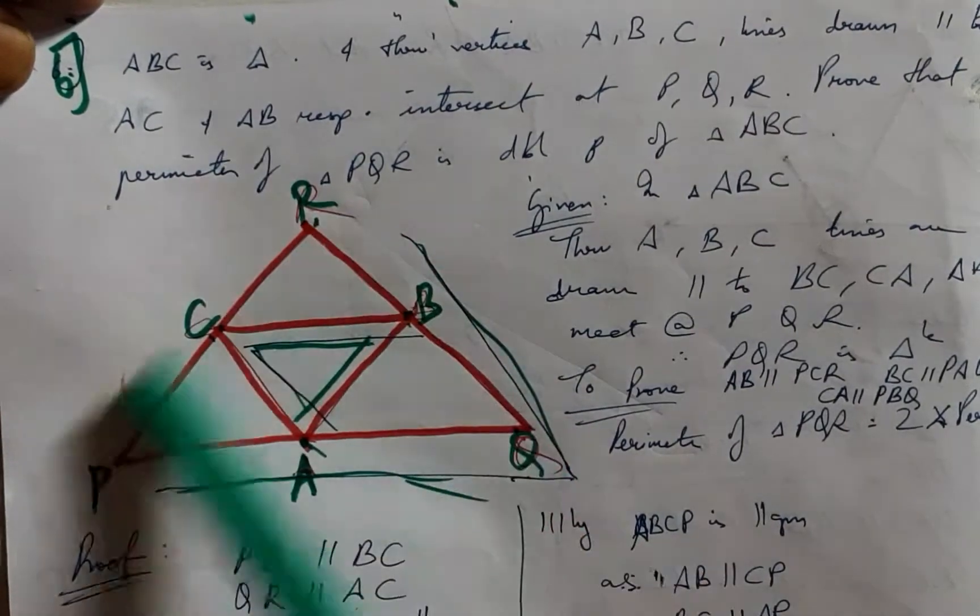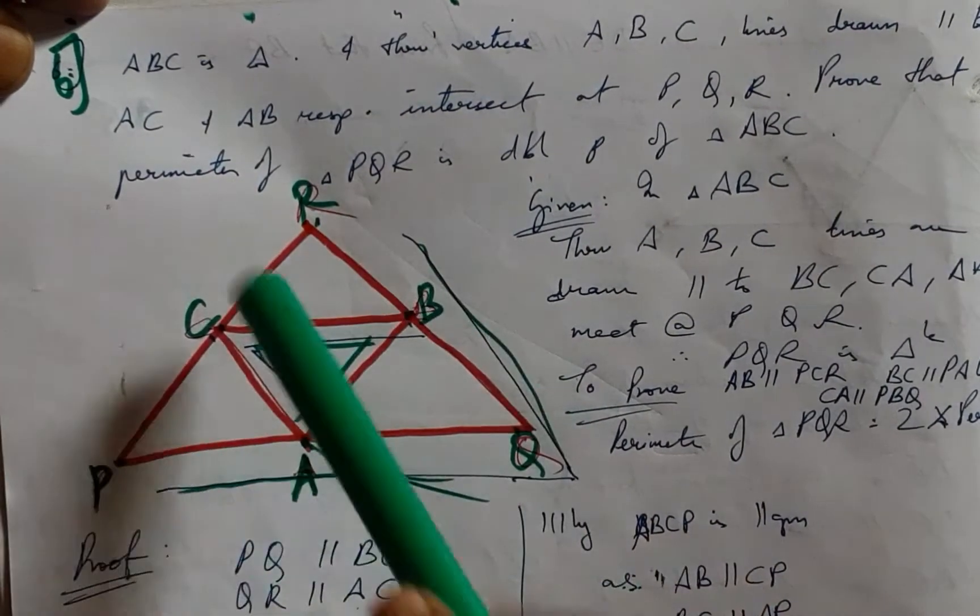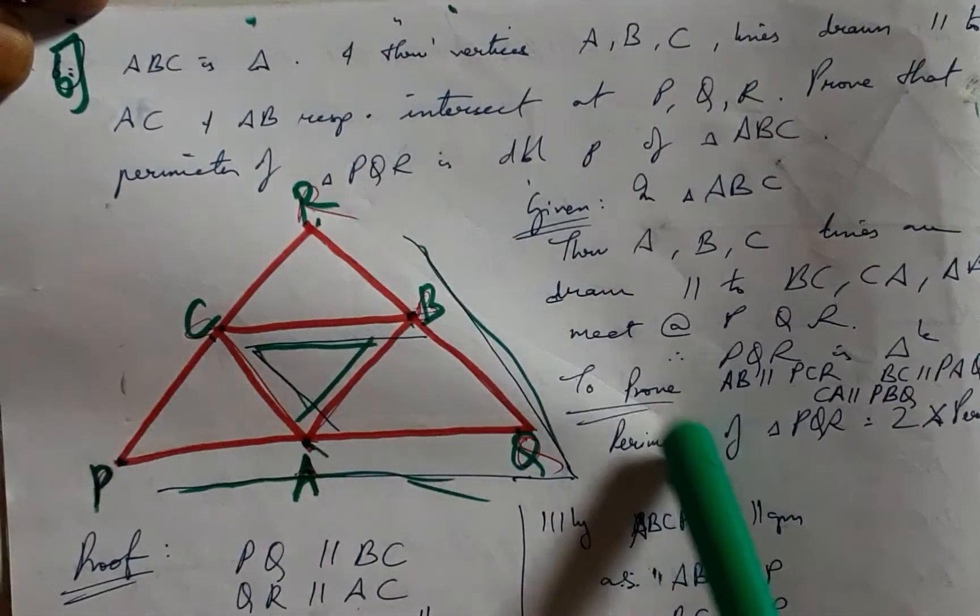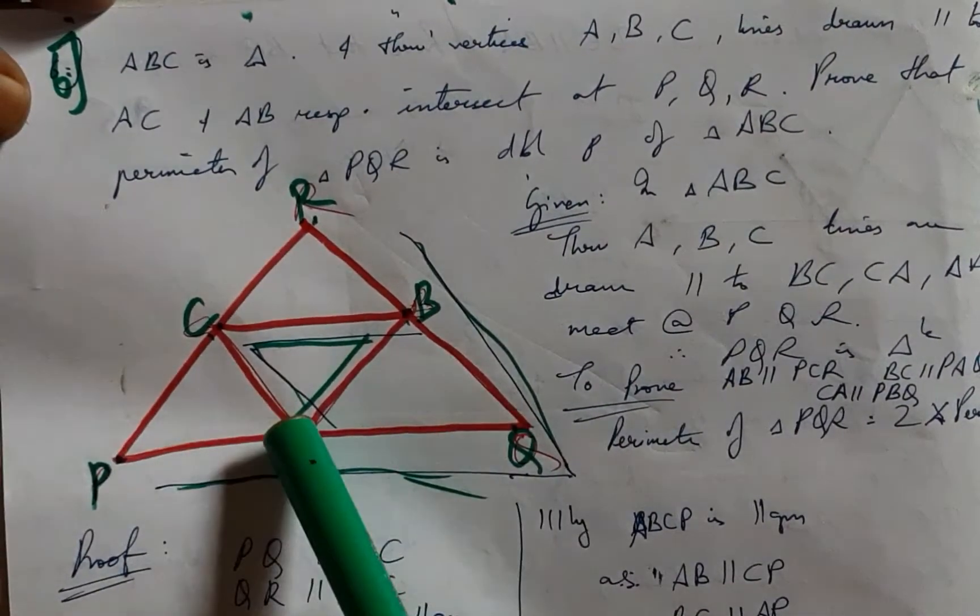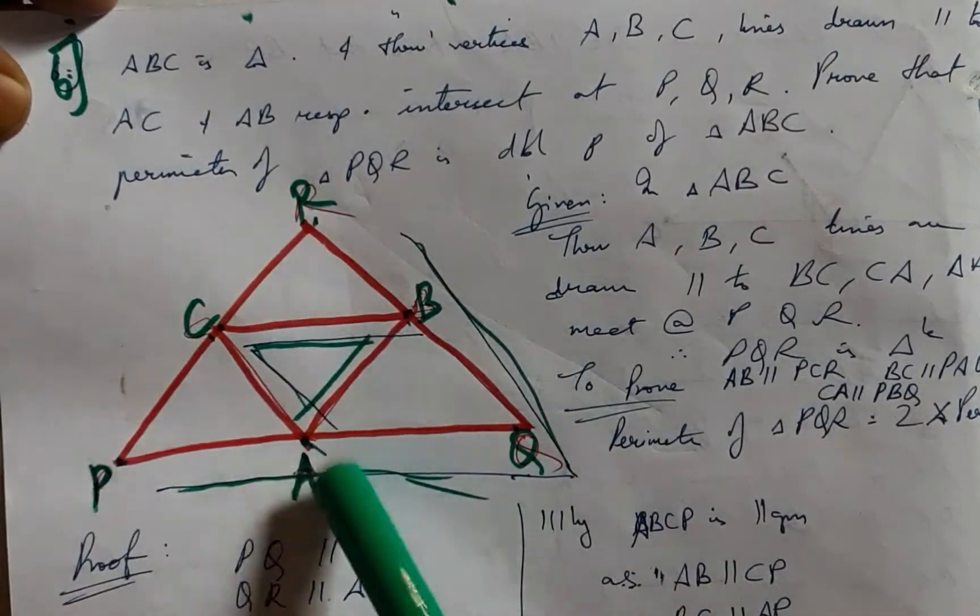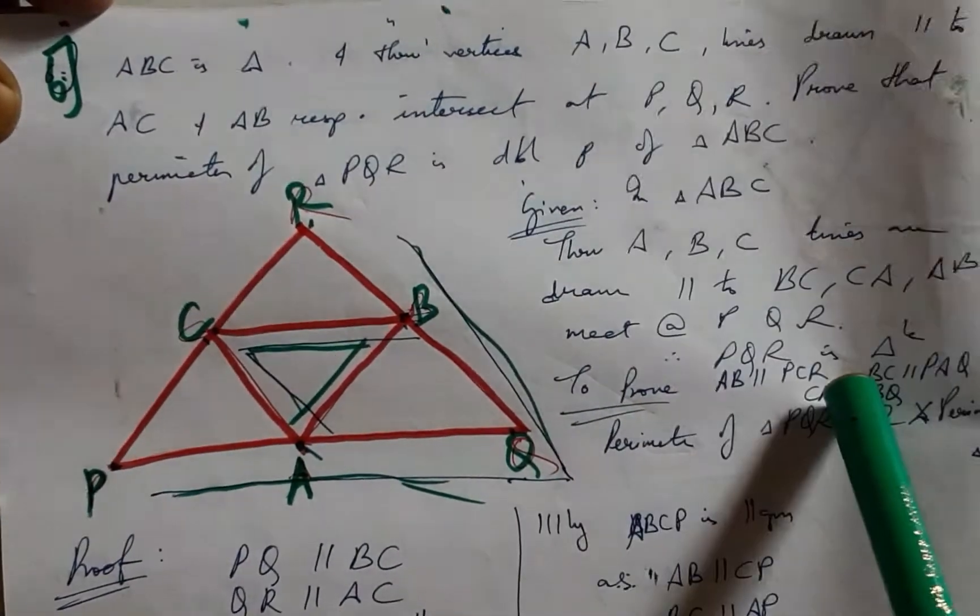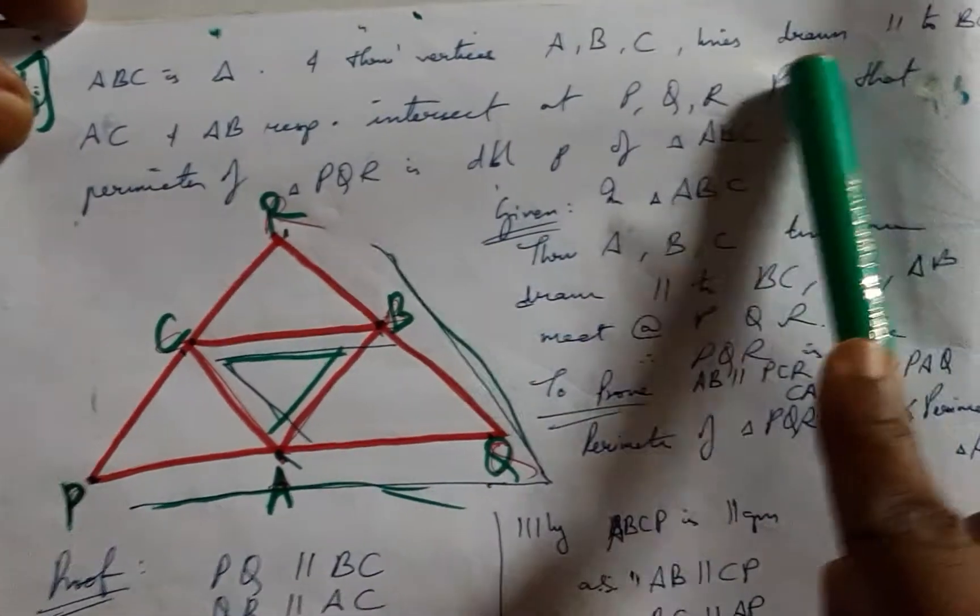They also form a triangle PQR, and now we are supposed to prove the perimeter of PQR is double that of ABC. Many things have been given: this is parallel to this, this is parallel to this, and this is parallel to this, as defined in the question itself.